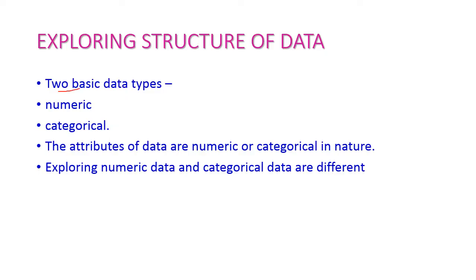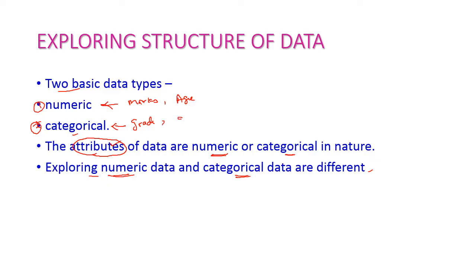As already mentioned, there are two basic types of data: numerical and categorical. The attributes of data are either numerical or categorical based on their values. Exploring numerical data is absolutely different from exploring categorical data. For example, marks are numerical data, while grade is categorical. Age is numerical data, and gender is categorical data.